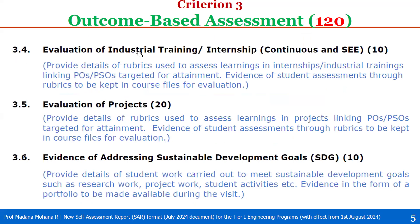The next one, 3.4: evaluation of industrial training or internship. Their continuous and SEE evaluation carries 10 points. Here we have to provide details of rubrics used to assess learnings in internships and industrial trainings, and also linking POs and PSOs targeted for attainment. We have to provide evidence of student assessments through rubrics, which can be kept in course files for evaluation.